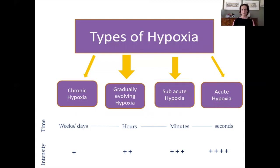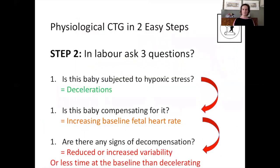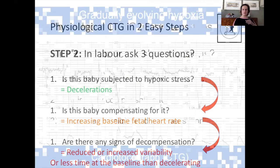This slide is to remind you of the types of hypoxia. Most babies will sustain some degree of hypoxic stress that causes no harm — it is normal. We have seen how to exclude chronic hypoxia at the beginning of the trace. Then gradually evolving hypoxia is the stress that evolves during the hours of labour. Subacute is a more intense stress usually developing over minutes. And the acute type is a sudden cut in oxygen delivery — typical of acute hypoxic episodes.